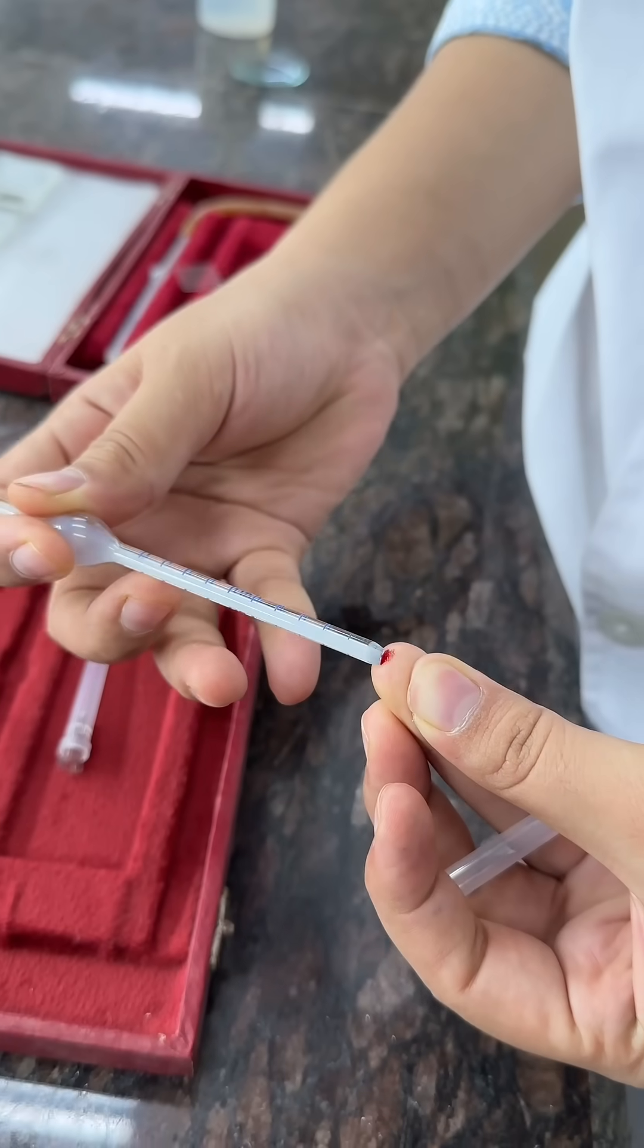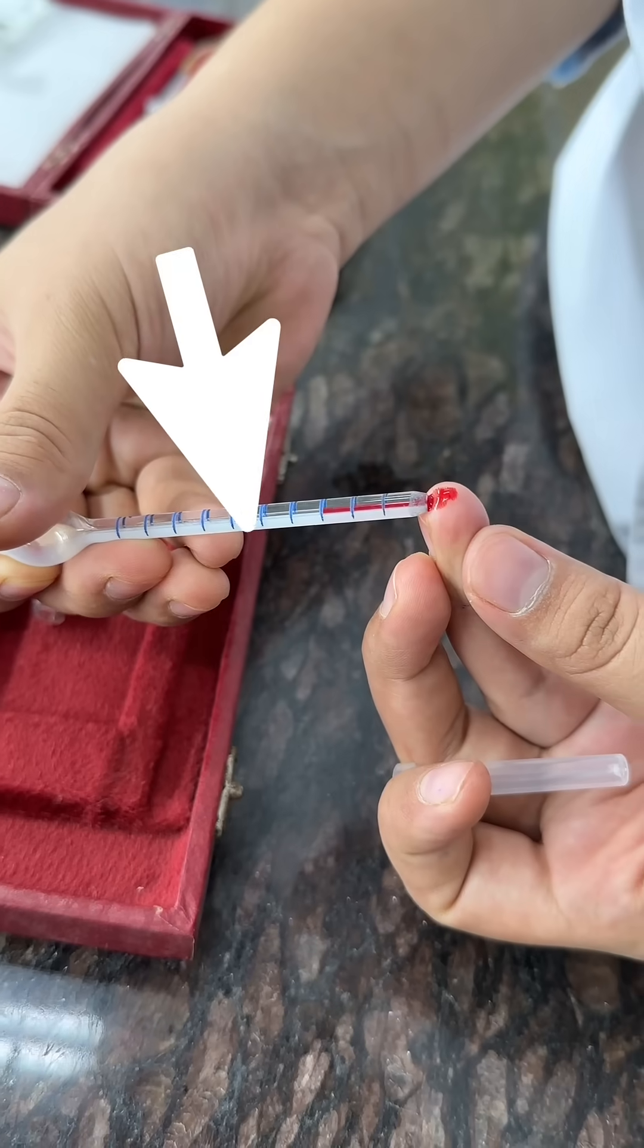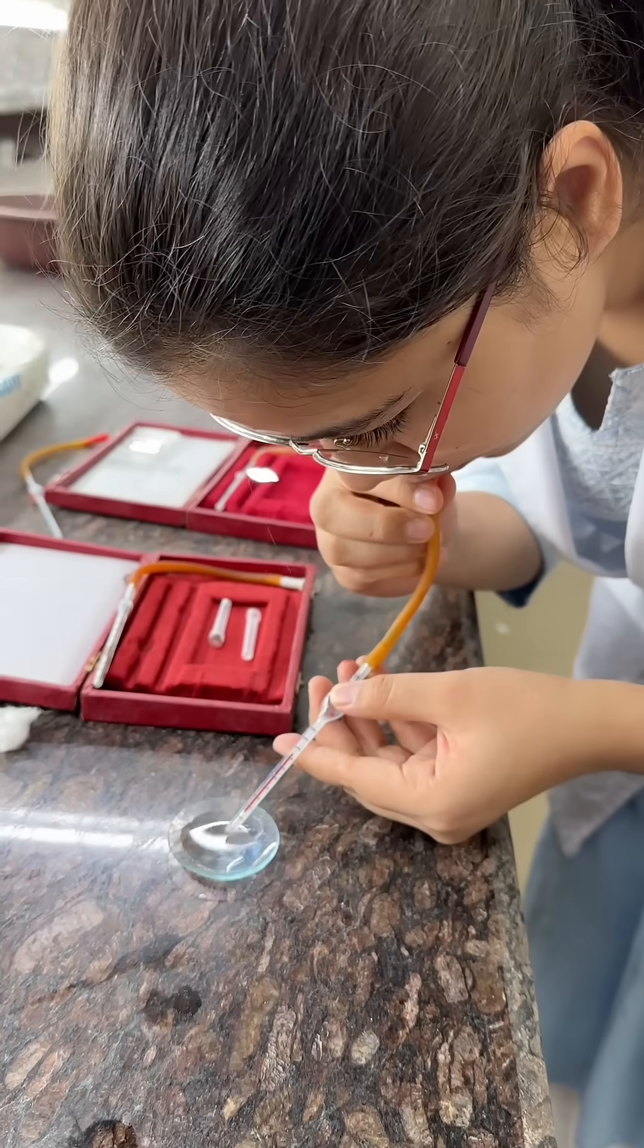Then pricking the finger to fill the blood in RBC pipette up to 0.5 mark. Now suck Haem's fluid in pipette up to mark 101.